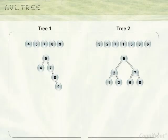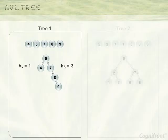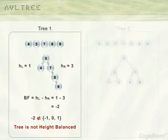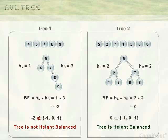To understand the concept of height balanced trees, consider these two trees. For tree 1, the height of left subtree HL of root 5 is 1 and the height of right subtree HR is 3. We calculate BF as HL minus HR, that is 1 minus 3 equals minus 2. Since it is not minus 1, 0, or 1, tree 1 is not height balanced. For tree 2, the BF is 2 minus 2 which equals 0, so tree 2 is a height balanced tree.